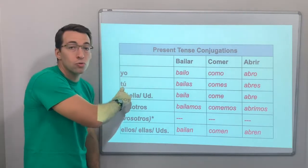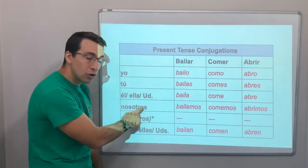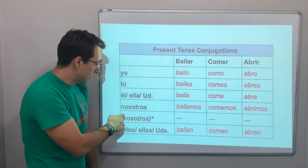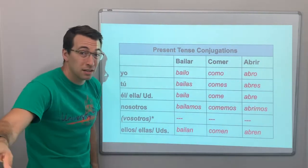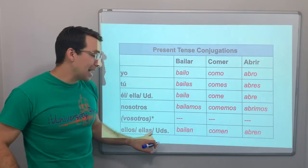You're always going to have in this order, the conjugations. Yo, tú, él, ella, usted. Nosotros, nosotras. Nosotros, nosotras. Or, vosotros. In this class, we're not dealing with vosotros. Ellos, ellas, ustedes.